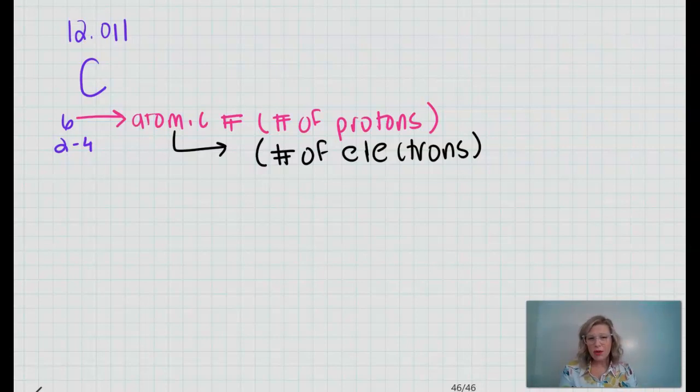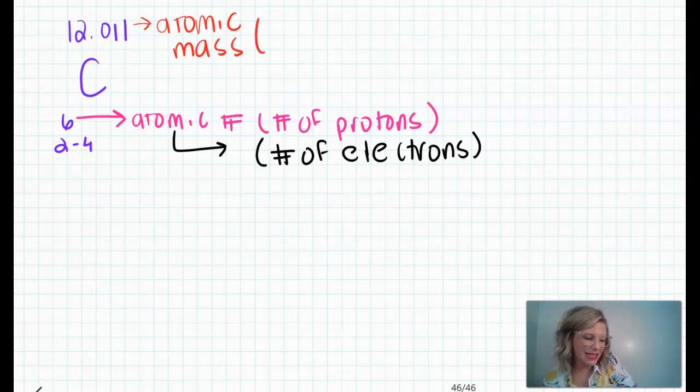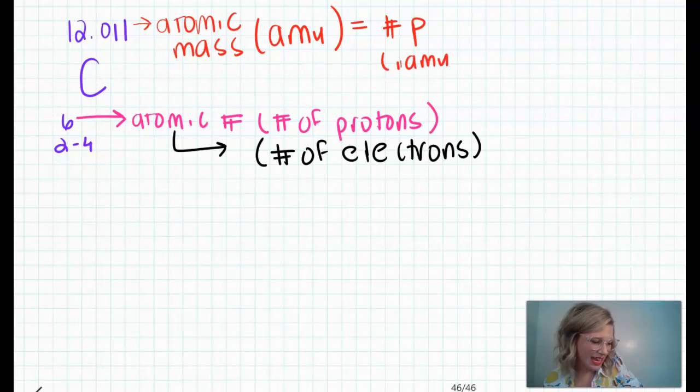So how, then, do we determine the number of neutrons? Now, remember, we said the mass of the atom comes specifically from the one AMU per proton and the one AMU per neutron. So I have here what is called my atomic mass, and my atomic mass tells us the total mass in AMU. So I want to know, then, how do I determine the number of neutrons? Well, my atomic mass is the number of protons. Remember, they're each one AMU. And it's the number of neutrons, which, again, are each one AMU.